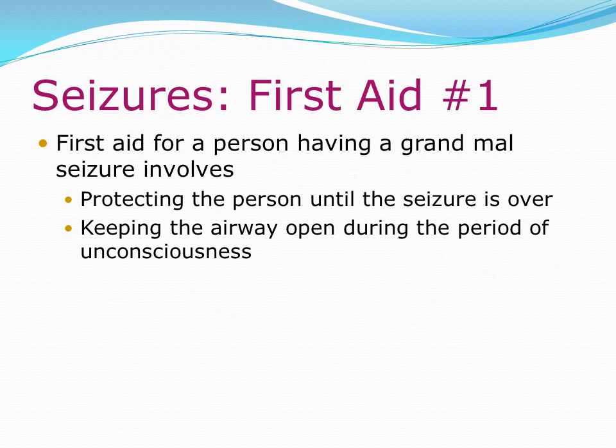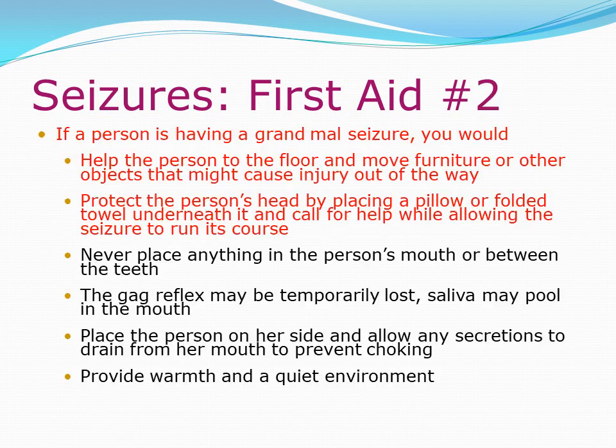First aid for seizures: For a grand mal seizure, protect the person until the seizure is over and keep the airway open during unconsciousness. Help the person to the floor, move furniture and objects that might cause injury out of the way, and protect the person's head with a pillow or folded towel. Call for help and allow the seizure to run its course. Never place anything in the person's mouth or between the teeth. Place the person on their side to allow secretions to drain from the mouth to prevent choking. Provide warmth and a quiet environment.